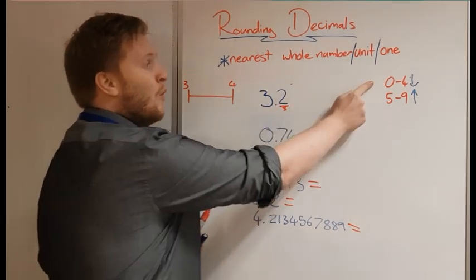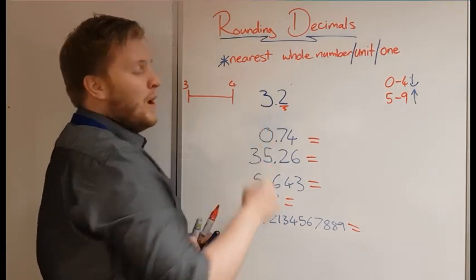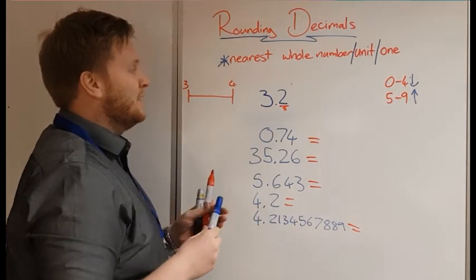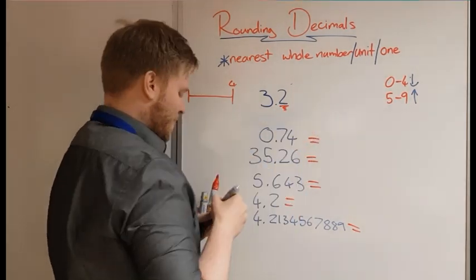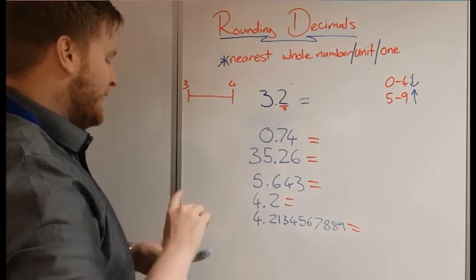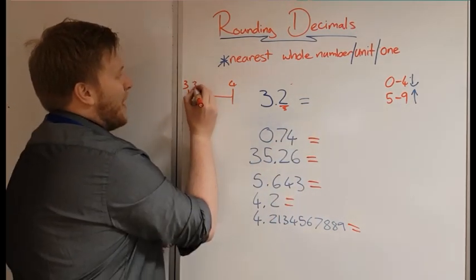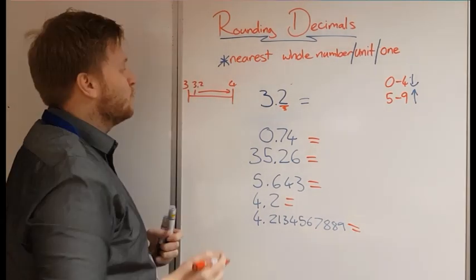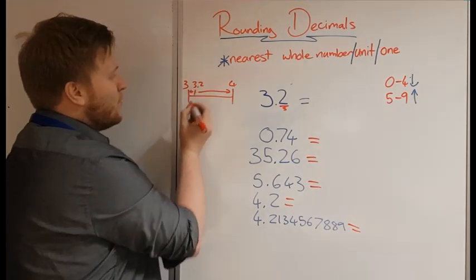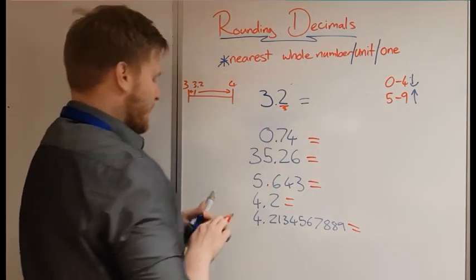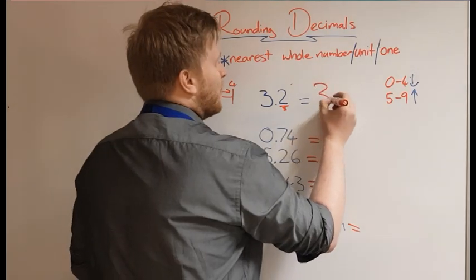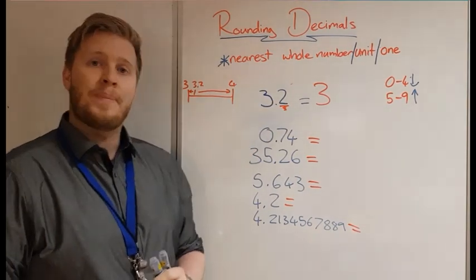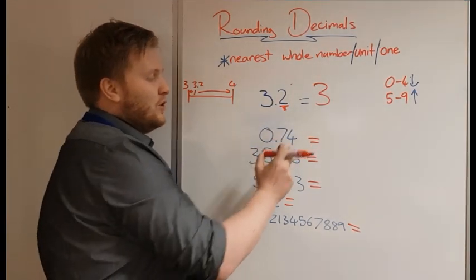We have a 2 in the tenths column, which is between 0 and 4, so we round down. Be careful — rounding down doesn't mean the answer is 2. On the number line, 3.2 sits between 3 and 4. Rounding down means we go down to 3. So 3.2 rounded to the nearest whole number is 3.